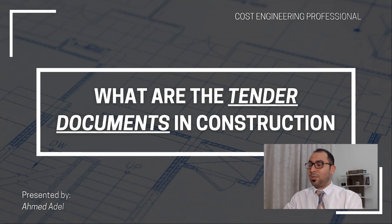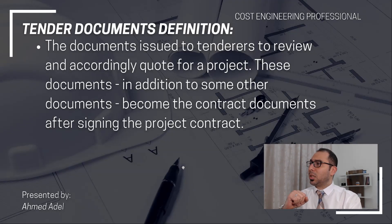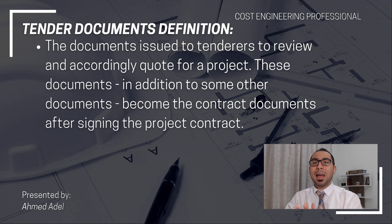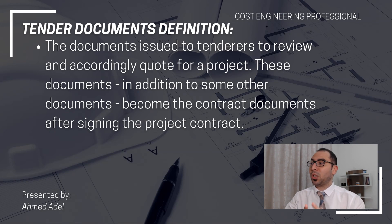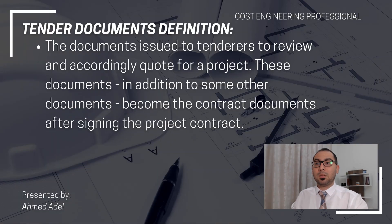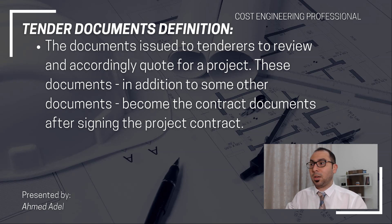Let's go now to the definition. The tender documents definition is: the documents issued to tenderers to review and accordingly price for a project. These documents, in addition to some other documents, become the contract documents after signing the contract. So the documents that you receive — based on your review and understanding of them — you will make a quotation and submit your price for a specific project.